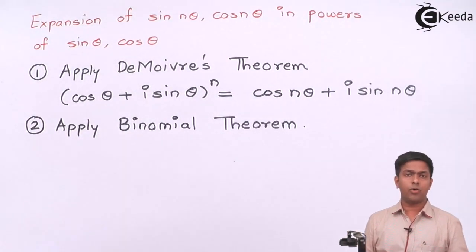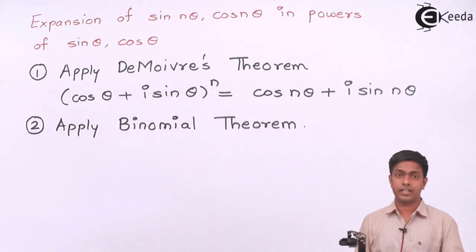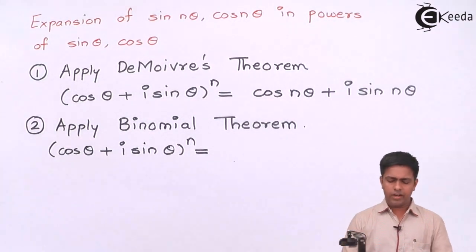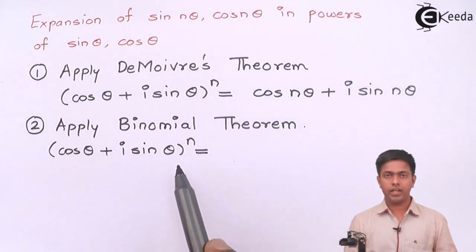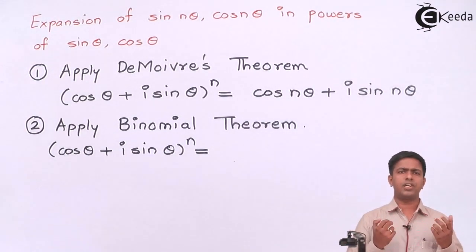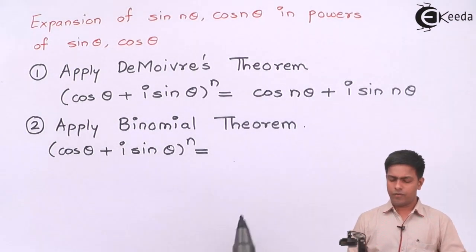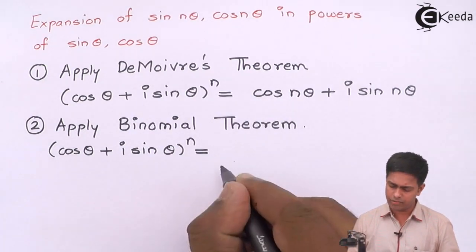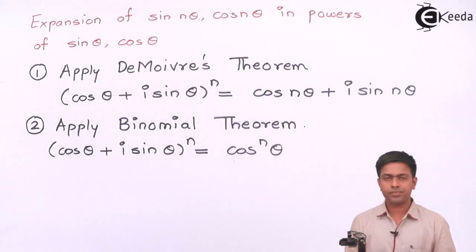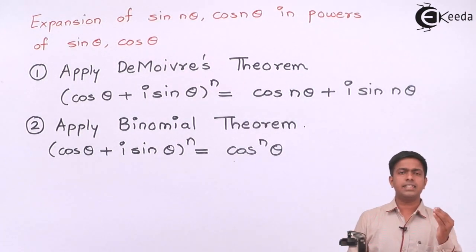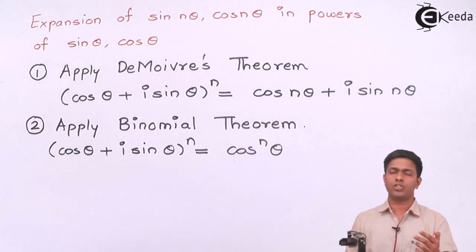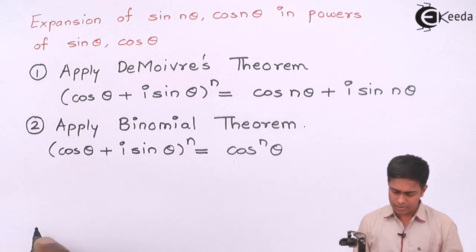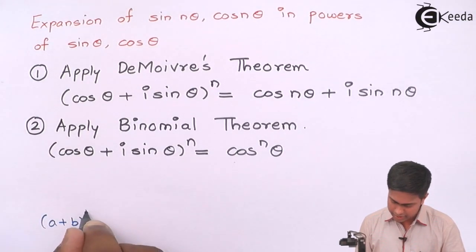By the Binomial theorem applied to (cos θ + i·sin θ)^n, we treat it as (a + b)^n — the general form. The first term is a^n, so cos θ behaves as a, giving cos^n(θ). The second term is nC1 · a^(n−1) · b^1. For reference, the Binomial theorem states (a + b)^n equals the sum of nCr · a^(n−r) · b^r terms.